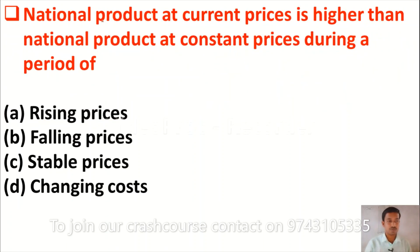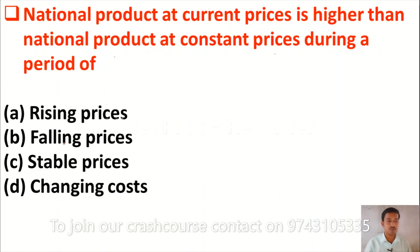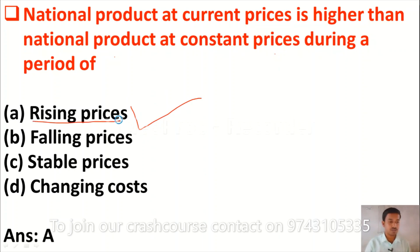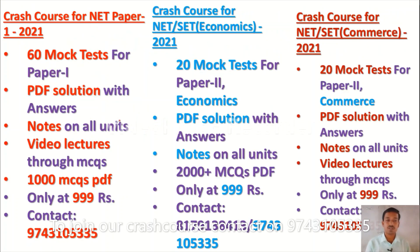The next question is: national product at current prices is higher than national product at constant prices during a period of — option A: rising prices, option B: falling prices, option C: stable prices, option D: changing costs. The correct answer is option A, rising prices. National product at current price is higher than at constant price when prices are increasing.